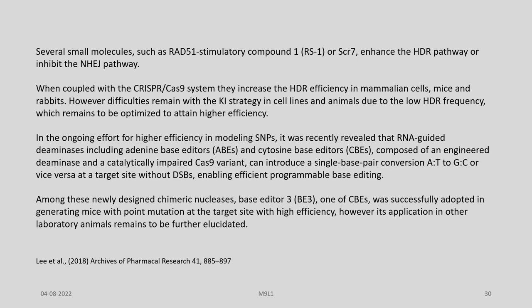In ongoing efforts for higher efficiency in modeling SNPs, it was recently revealed that RNA-guided deaminases — including adenine base editors and cytosine base editors composed of an engineered deaminase in a catalytically impaired Cas9 variant — can introduce a single base conversion (A to T or G to C or vice versa) at a target site without double-strand breaks, enabling efficient programmable base editing. Among these, base editor 3 (BE3) was successfully adopted in generating mice with point mutations at the target site with high efficiency, though its application in other laboratory animals is yet to be elucidated.